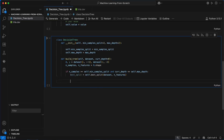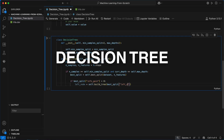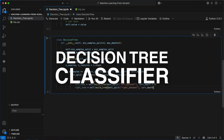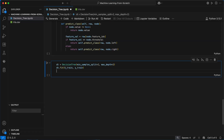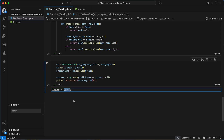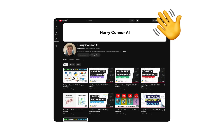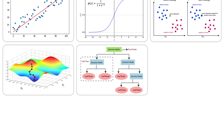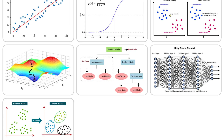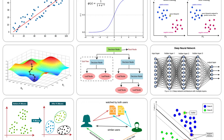In this video I'm going to be building a decision tree classifier from scratch in Python — no scikit-learn, just a pure mathematical implementation built from the ground up. Hey everyone, I'm Harry and this is episode 5 of the machine learning from scratch series, where I'm sharing my process as I work through implementing classic machine learning models from zero. Let's get straight to it.